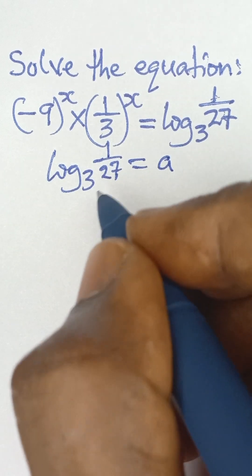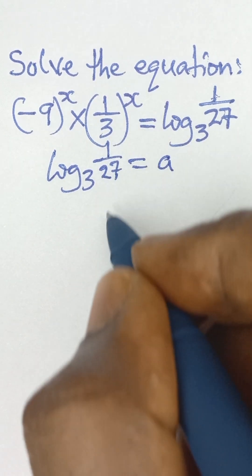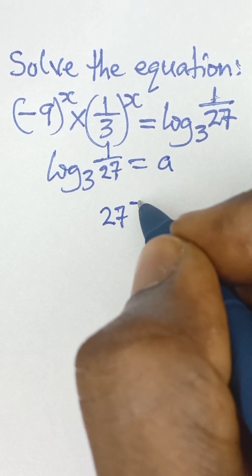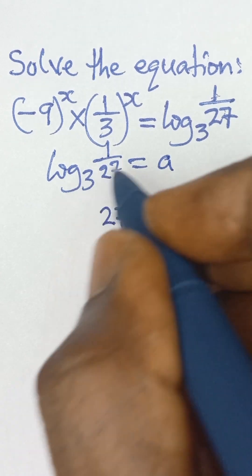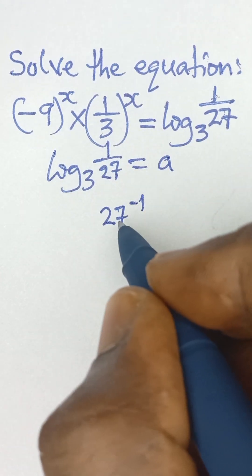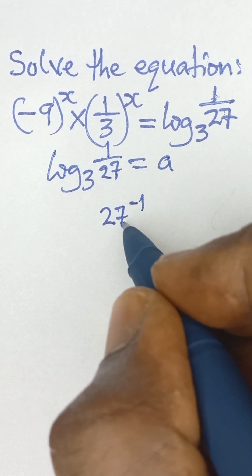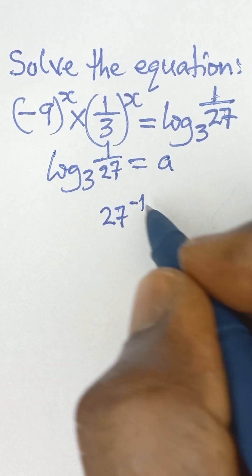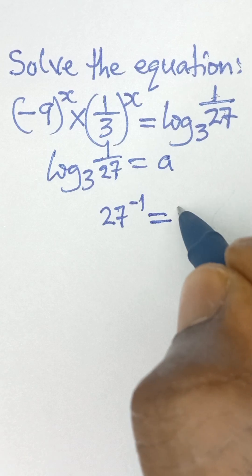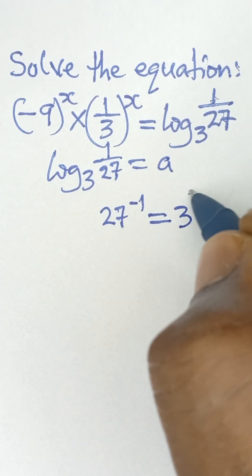To find the value of a, we express 1 over 27 as 27 raised to the power negative 1. Then, converting from logarithmic to index form: 27 raised to the power negative 1 equals 3 raised to the power a, since the base is 3.